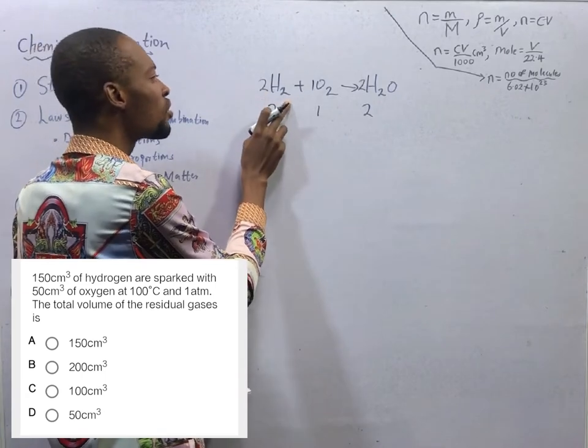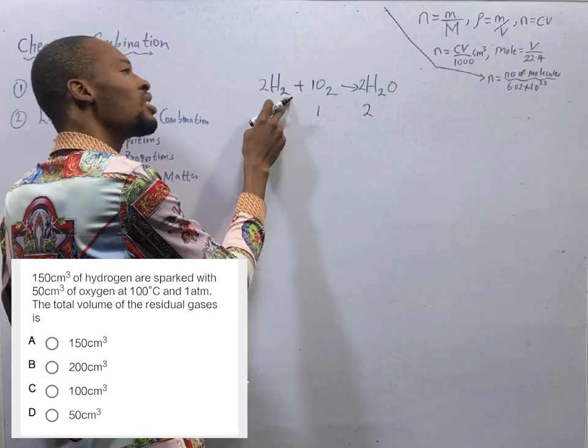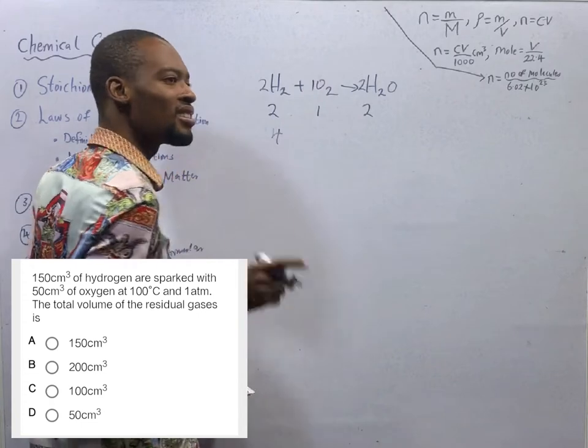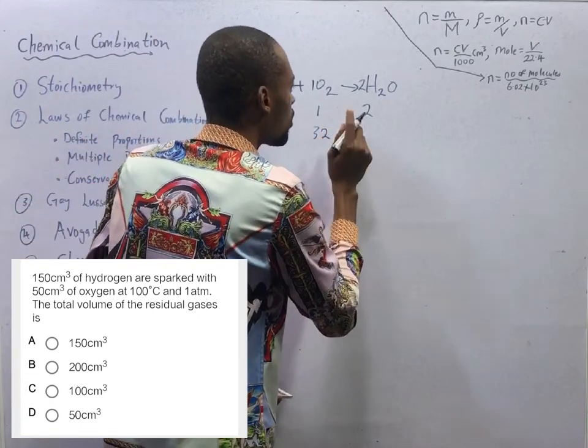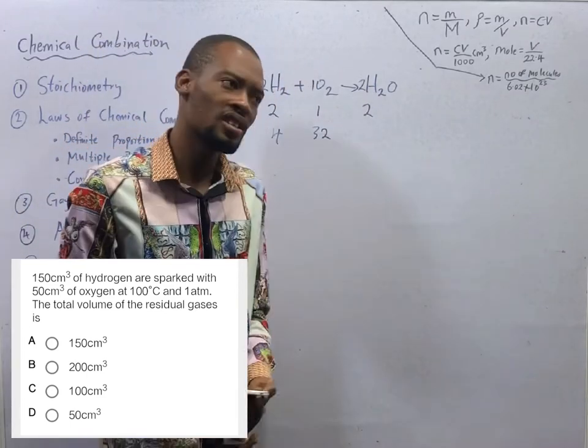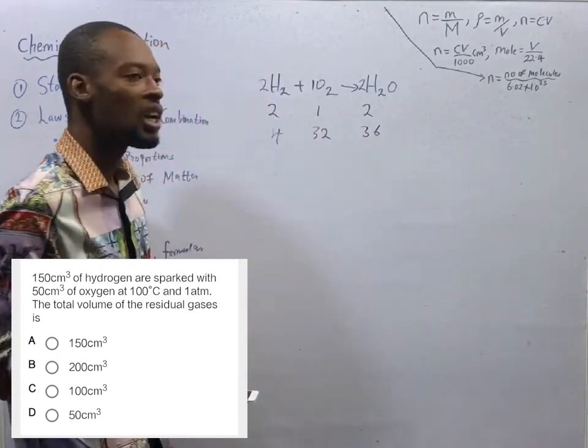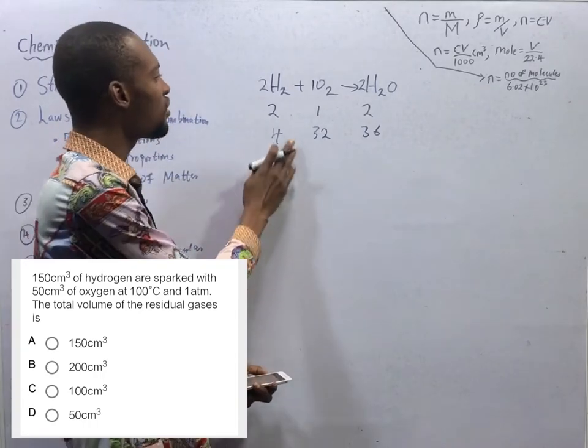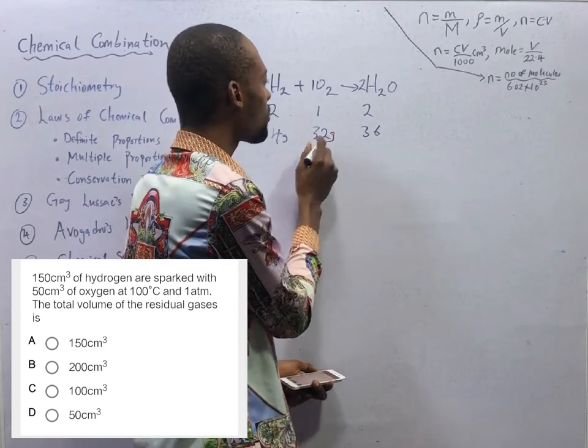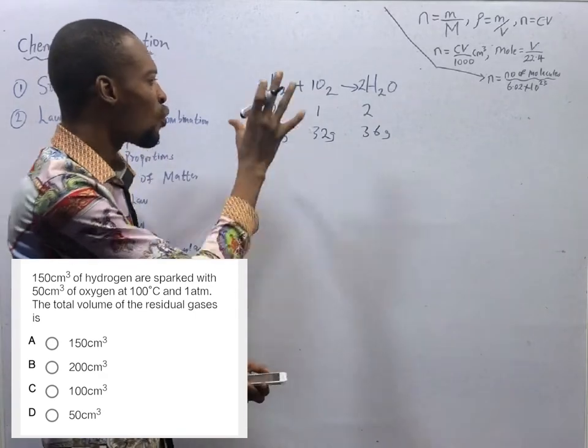The mass of 2H₂ is 4. The mass of hydrogen is 1. 1 times 2 is 2 times 2, 4. The mass of 1 mole of oxygen is 16 times 2, that is 32. The mass of 2 moles of water, 1 mole of water is 18 grams. 18 times 2, that should give you 36. So, another thing that should be is that we need 4 grams of hydrogen to react with 32 grams of oxygen to give us 36 grams of water.